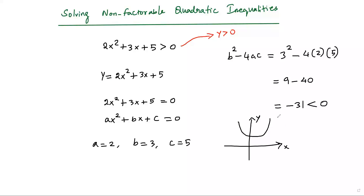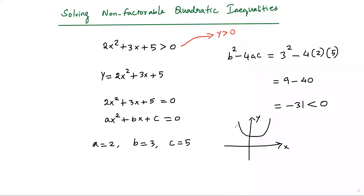Considering the parabola, it opens up because the leading coefficient is positive, and since the quadratic function has no zeros, it does not intersect the x-axis. The parabola is entirely above the x-axis. If you consider any point on this parabola, the y-coordinate is positive. So for any real value of x, y is always positive. Therefore, the solution for this quadratic inequality is all real values.